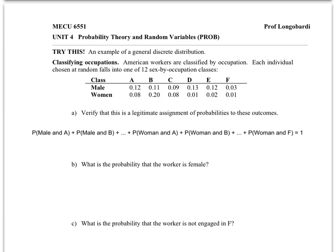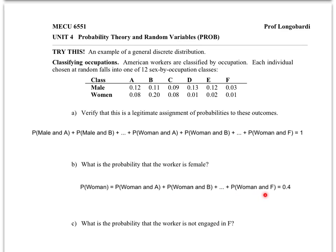The next question: what's the probability that a worker is female? We need to add up across the female row. The probability of a woman equals the probability of woman-and-A, plus woman-and-B, and so on across the row. When you add all those up, you get 40%.